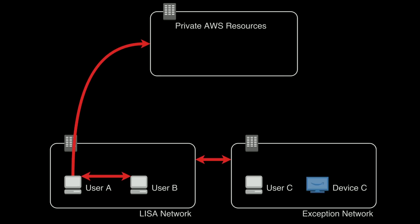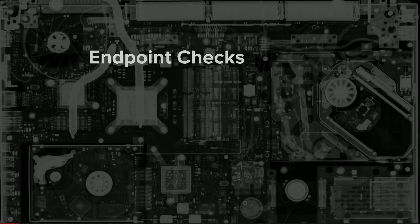You definitely want to pull any whitelists out of your internal applications. Endpoint checks are done by the VPN client itself — just checking to make sure you meet corporate security standards. Is your drive encrypted? Do you have anti-malware tools on? Do you have screen lock on? It's a gating factor, just like with identity: if you don't pass these checks, you can't get on the VPN.